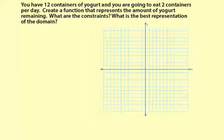So you have 12 containers of yogurt. That's the initial amount right here. So let me put a point on this graph. 1, 2, 3, 4, 5, 6, 7, 8, 9, 10, 11, 12. Okay, right here.